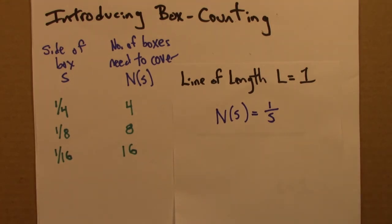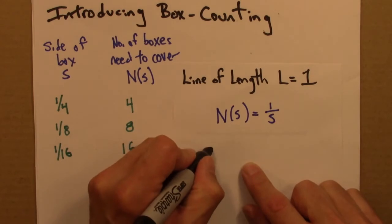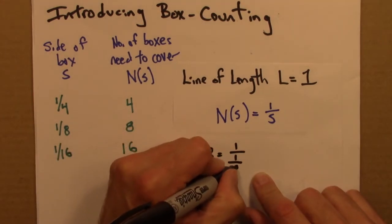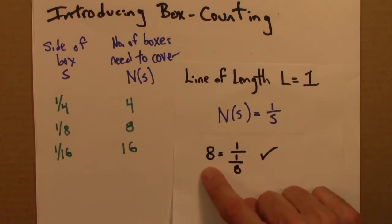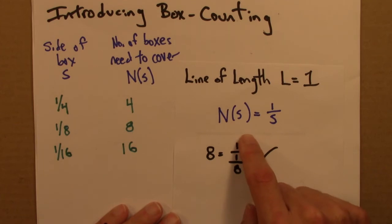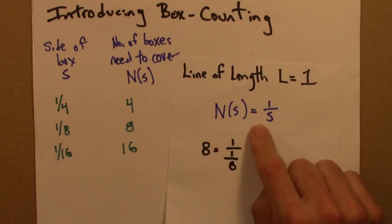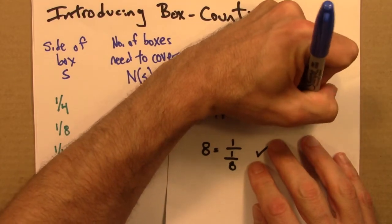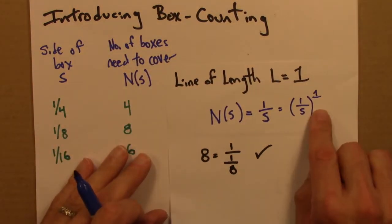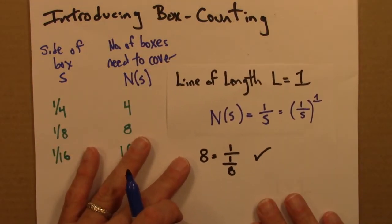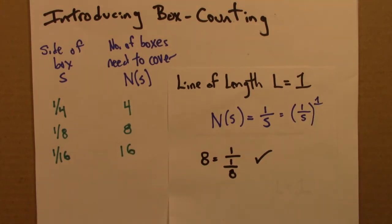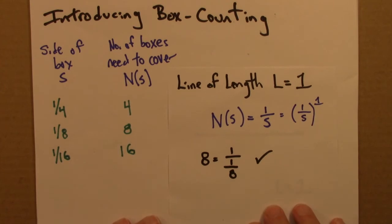That N of S is just one over S. To see that, let me just plug in a number. Let's try the middle row. N of S is eight. And one over, what's S? S is an eighth. And that is indeed true. One over one over eight is the same thing as eight. How many eighths are there in one? There are eight of them. So, N of S is one over S. And we could write this, by the way, as one over S to the one. One over S to the one is the same thing as one over S. And I hope I'm not giving away the punchline. But this one is here. Why? Because this line is one-dimensional.